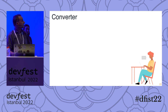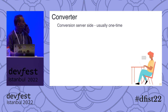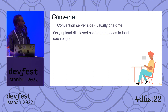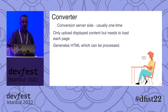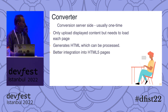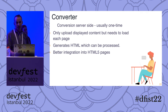The other option is to convert it server-side — that's normally a one-time process. You upload only the displayed content, but obviously if you have multiple pages, you need to handle them accordingly, so there's an architecture question depending on how you're building your web app. One of the nice things about converting server-side is you're then in the HTML5 system — so you have HTML5 which can be processed, parsed, and manipulated. A lot of clients use our converter to convert to HTML because they want to process and manipulate it on the server-side. It also gives you better integration with HTML pages because it already is HTML — you can use CSS, transform it, and scale it nicely.